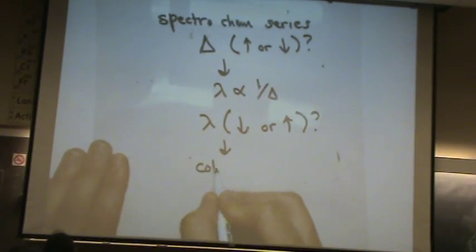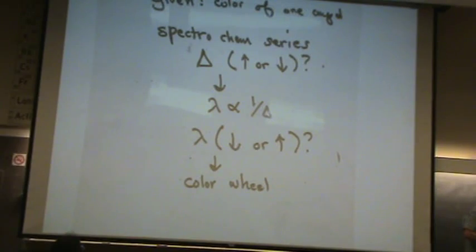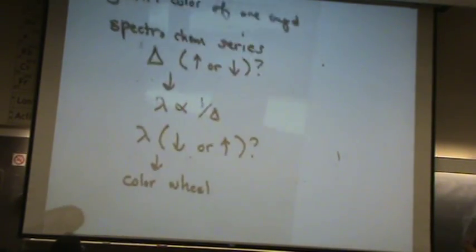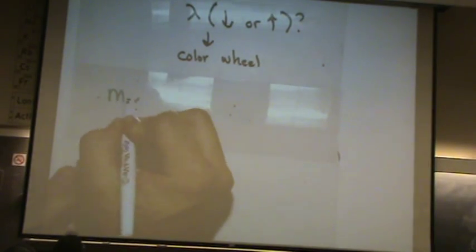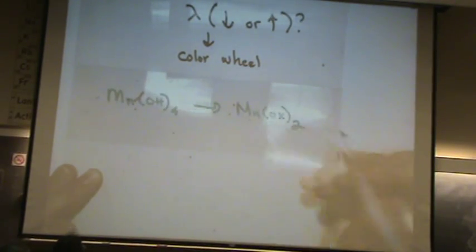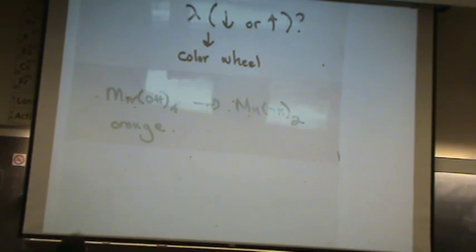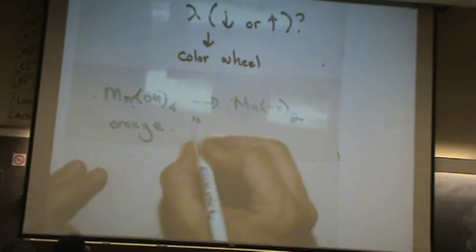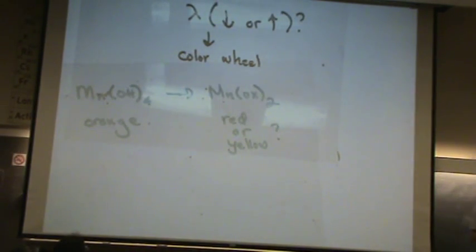Then you look at the color wheel for the color change. Let me do a little example. Let's say we had MnOH4 and this went to MnOx2. I tell you that this one is orange, and I want to know: is this one red or yellow? That's a pretty typical sort of question when you're comparing two compounds.